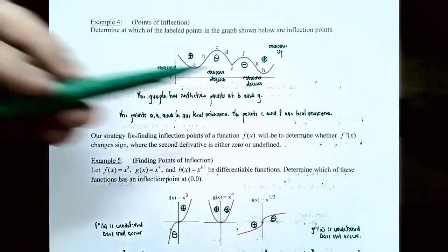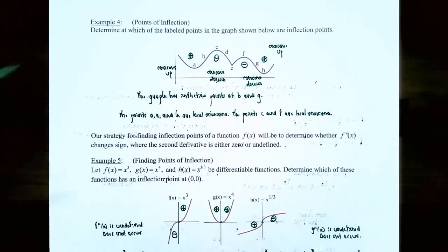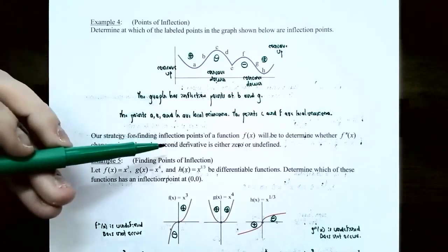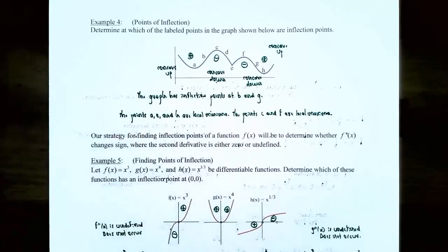It's relatively easy to find inflection points if you're given the graph. The strategy is: find the second derivative of the function, construct a sign chart for the second derivative to find out whether the graph is concave up or concave down. The values that go on the sign chart are where the second derivative is either zero or undefined.